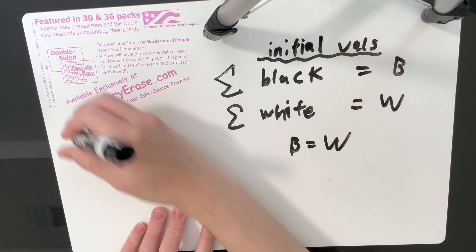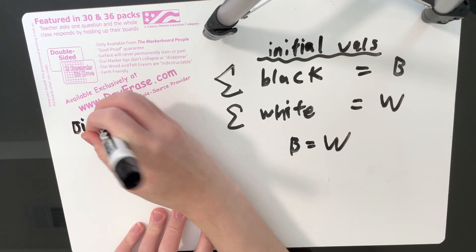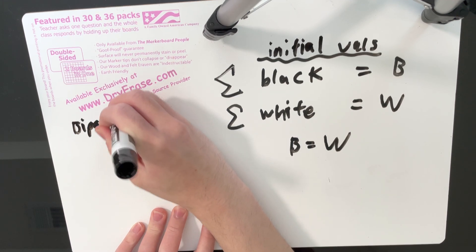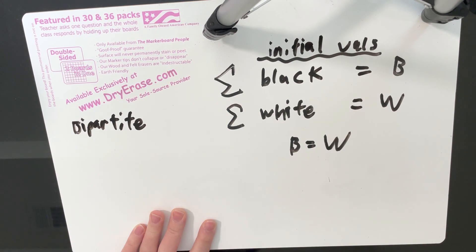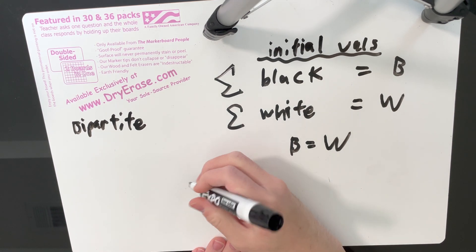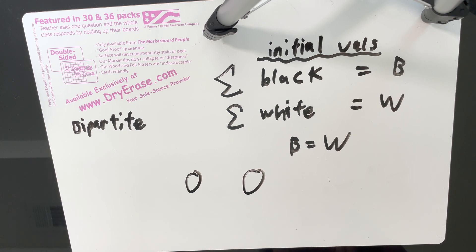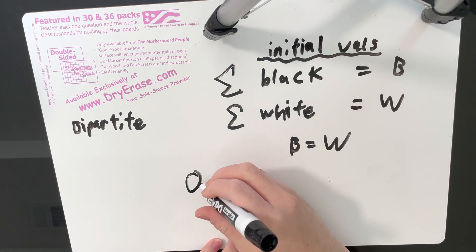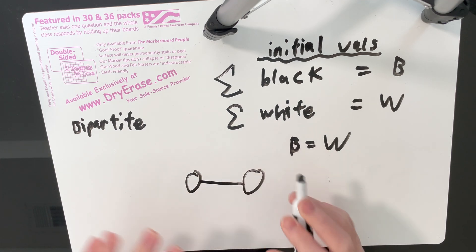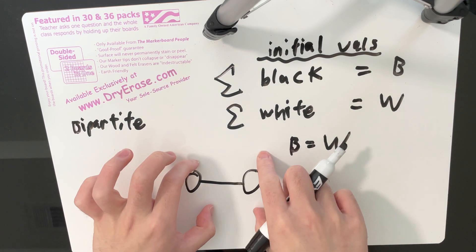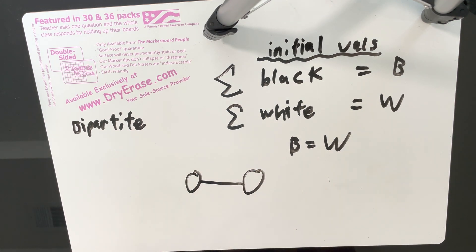If the graph is bipartite, all you have to check is whether B equals W. If it is, then it's possible. As explained earlier, we can change the values between black and white nodes freely. For two different adjacent nodes, what matters is that if we have a white and a black node, we have to increase the white node by the same value as we increase the black node.